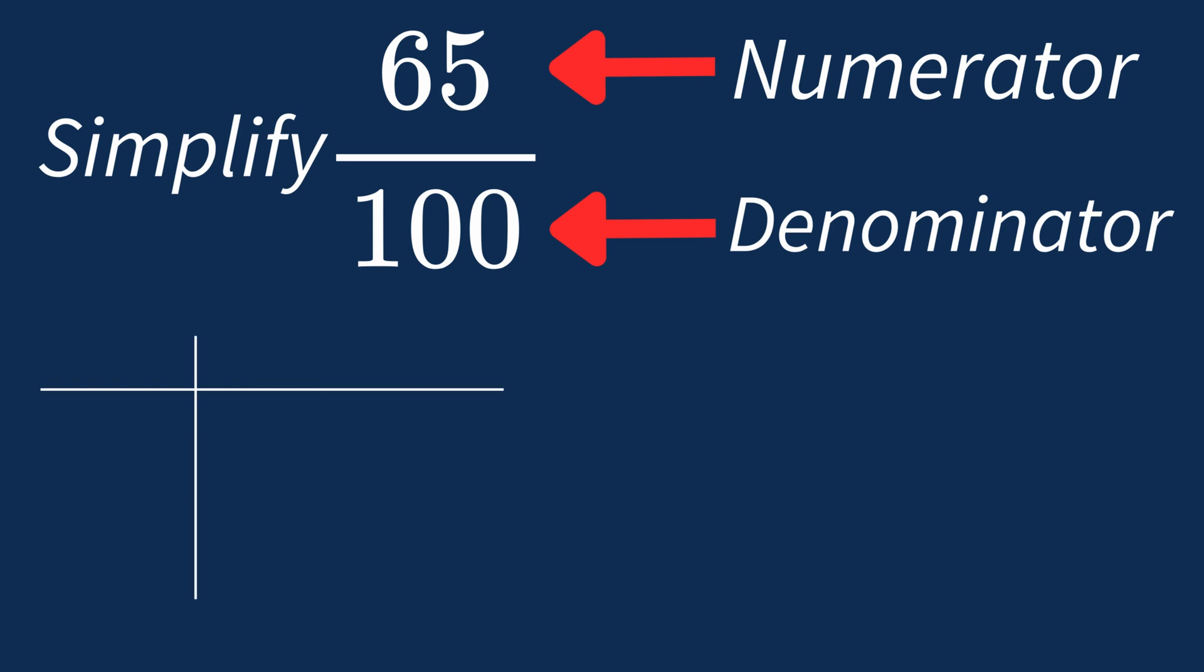First, let's list out the factors for each. For 65, the factors are 1, 5, 13, and 65.